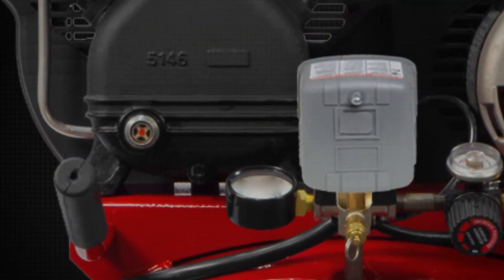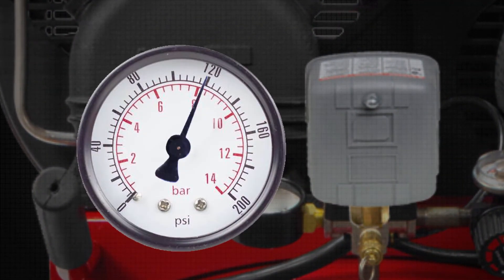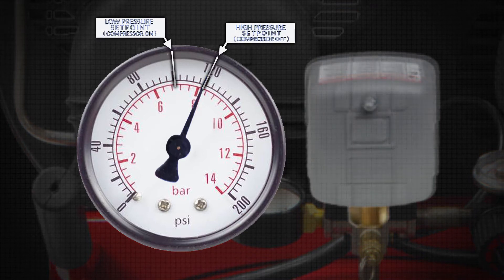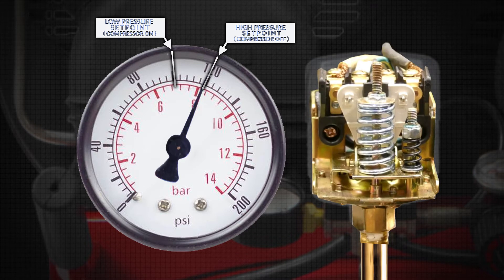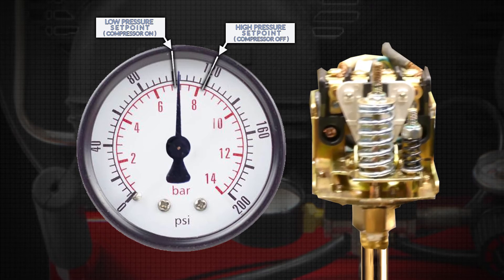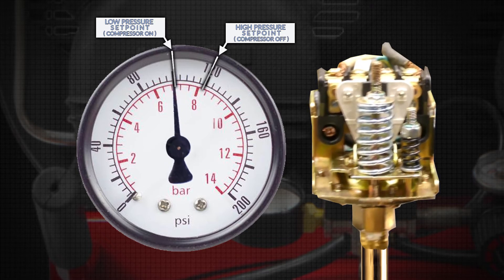An air compressor pressure band gap is the area between the low and high pressure set points. In most air compressors, the set points are set with a mechanical switch that relies on spring tension that is imprecise, unrepeatable, and subject to environmental humidity, vibrations, and pressure.